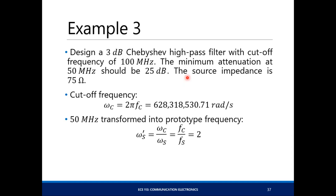More examples — this time Chebyshev. A Chebyshev high-pass filter with cutoff frequency of 100 MHz, minimum attenuation of 25 dB at 50 MHz, and source impedance of 75 ohms. Since it's a high-pass filter, the stop band is at 50 MHz. To get your low-pass prototype equivalent, flip the problem: your cutoff will be 50 MHz and your 100 MHz will be the stop-band frequency. So you divide 100 by 50 to get 2.